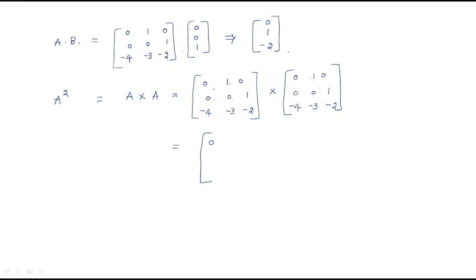Computing A²: the first row elements — 0×0 + 1×0 + 0×(-4) = 0; next element 0×1 + 1×0 + 0×(-3) = 0; then 0×0 + 1×1 + 0×(-2) = 1. Second row: 0×0 + 0×0 + 1×(-4) = -4; 0×0 + 0×0 + 1×(-3) = -3; 0×0 + 0×0 + 1×(-2) = -2.